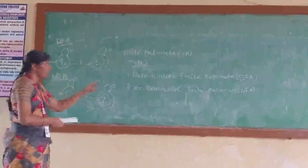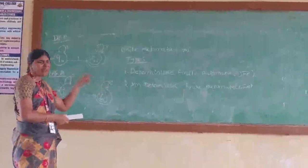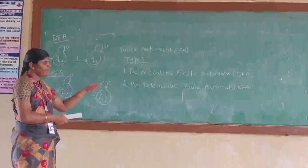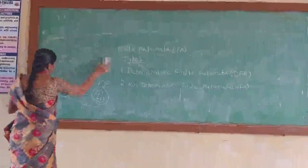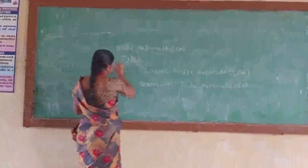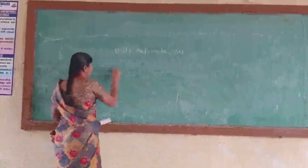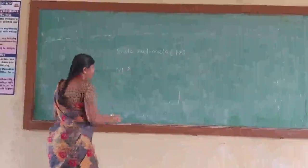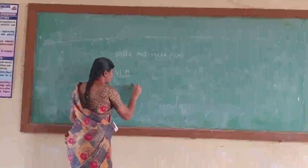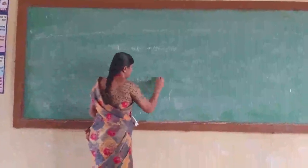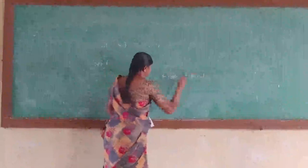In finite automata, we have the deterministic finite automaton where there is only one transition for a given input, and the non-deterministic finite automaton where there can be more than one transition for a given input.